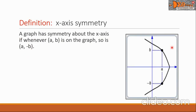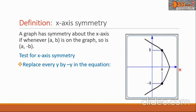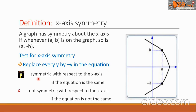I have here a figure — this is our x-axis. The point (a, b) is here while the point (a, -b) is here, and we can see a symmetry of this graph with respect to the x-axis. To test for x-axis symmetry for an equation, replace every y by negative y in the equation.